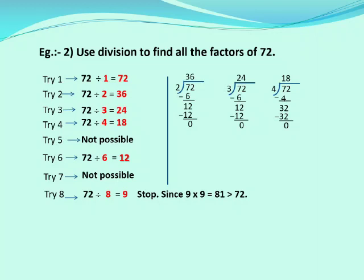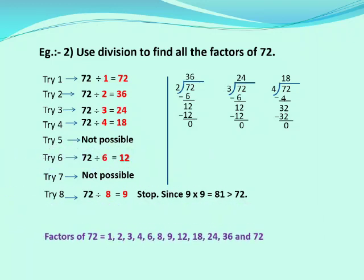Now let us see what are the factors of 72. Going in U shape: 1, 2, 3, 4, 6, 8, 9, 12, 18, 24, 36, and 72 are all the factors of 72.